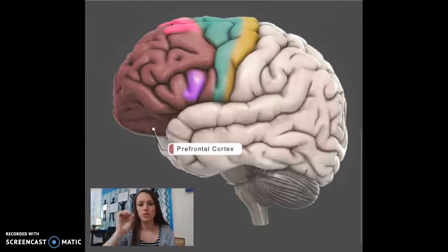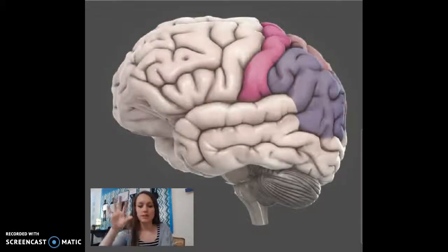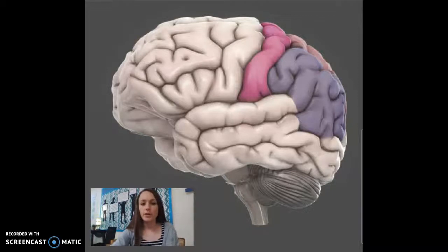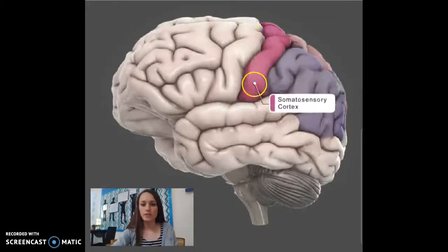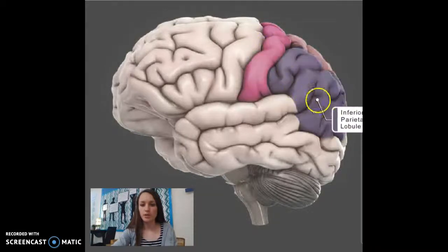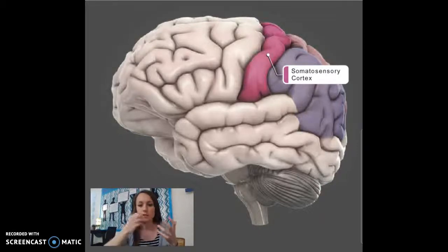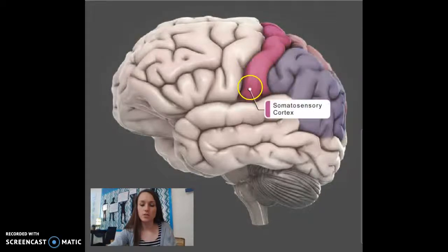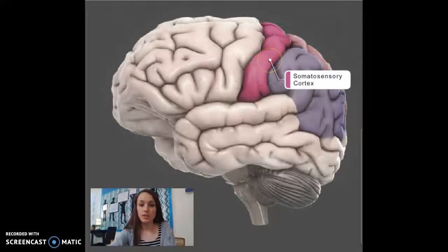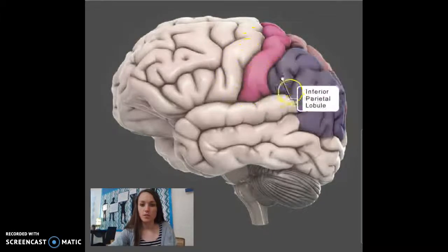Now we've isolated the parietal lobe — it's back here on the top of your head. The parietal lobe has some different colors, and the reason is they've made the somatosensory cortex a different color. This whole thing is the parietal lobe, but this part right here is special in that it controls the ability to interpret sensations — especially touch. This is where those sensations go to be processed. That stripe is important, and it backs up against the motor cortex from the frontal lobe.